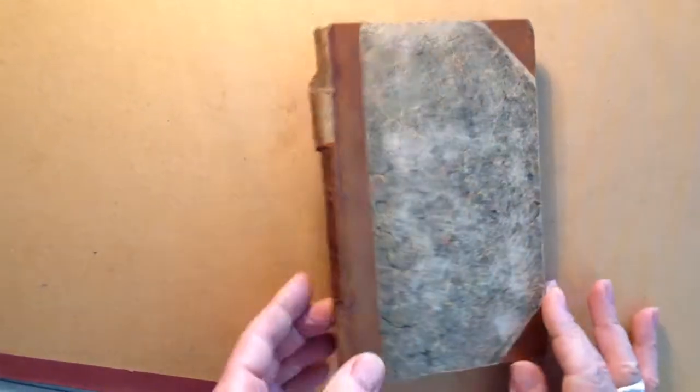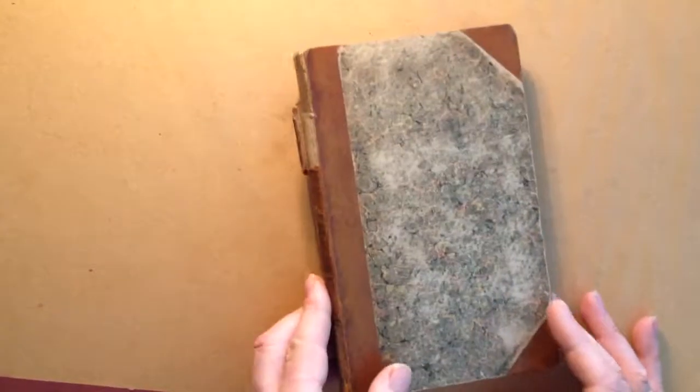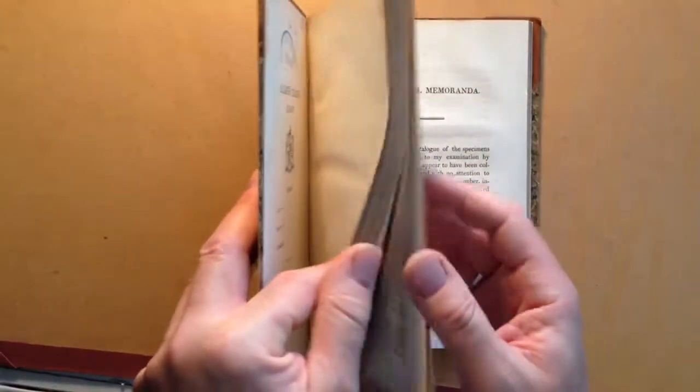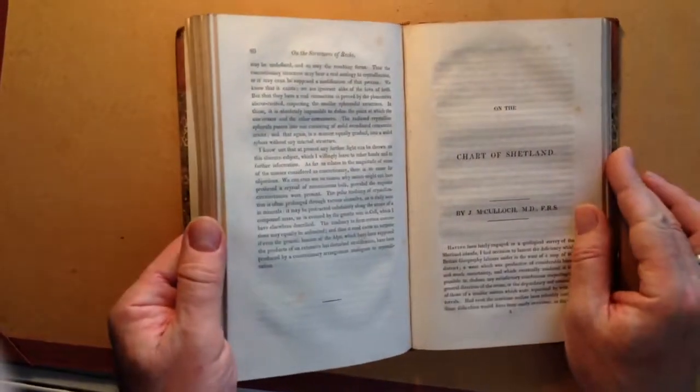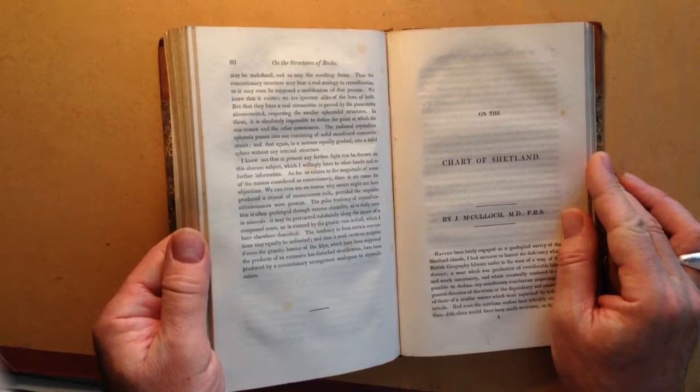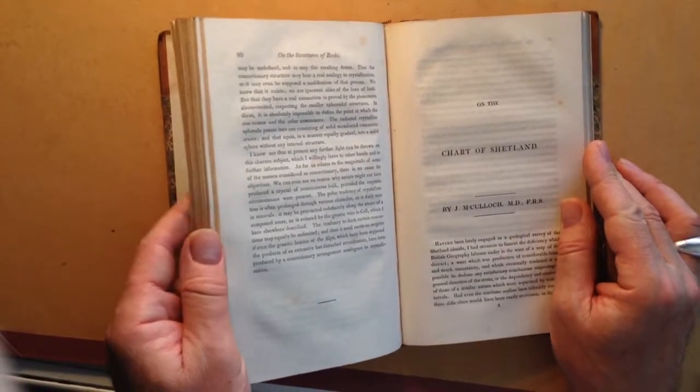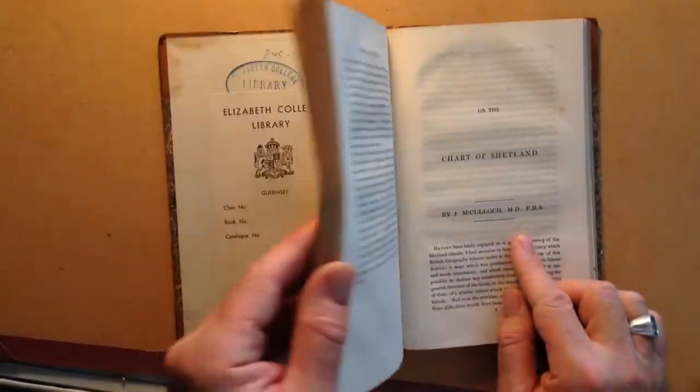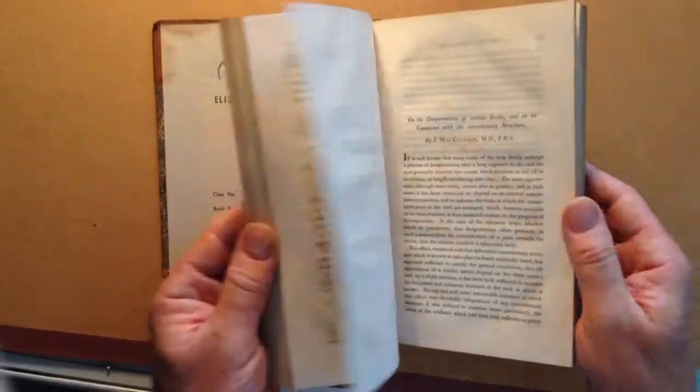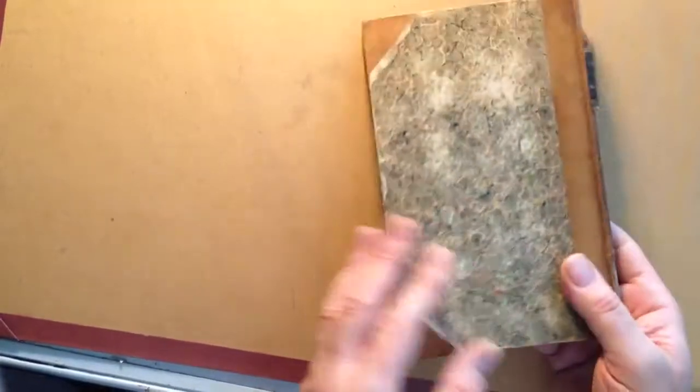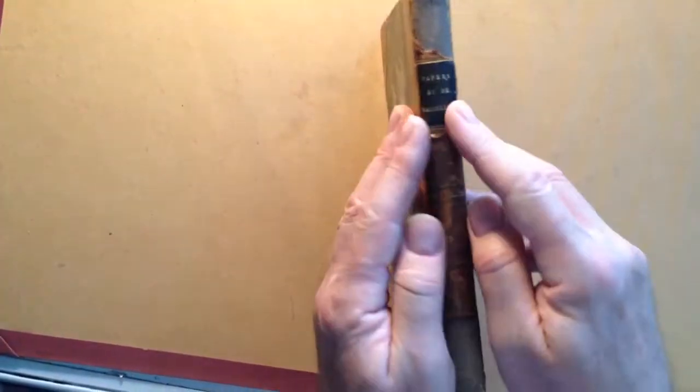Right, ladies and gentlemen, I hazard a guess that this book is pretty unique. It's a volume of around ten or a dozen Georgian pamphlets on geology, mineralogy, science, all by somebody called Jay McCulloch, M.D., a Scottish scientist, and they're all bound together in a contemporary sort of late Georgian, early Victorian sort of binding.